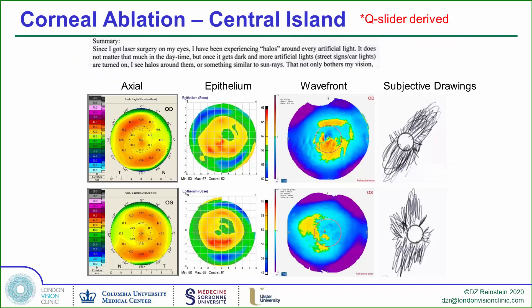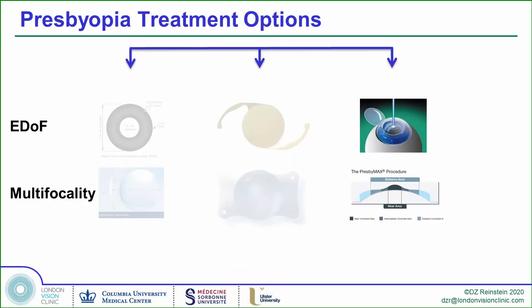Adjusting the Q slider has been used to target a postoperative negative Q factor, but in myopic ablations this causes a bifocal cornea with central islands, which significantly increase unwanted aberrations and cause loss of visual quality.